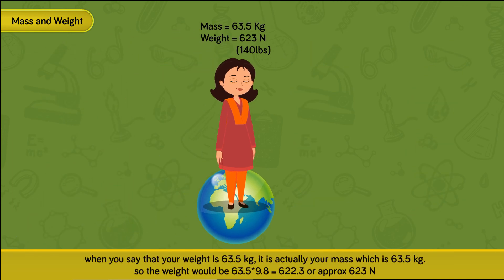So when you say that your weight is 63.5 kg, it is actually your mass which is 63.5 kg. The weight would be 63.5 into 9.8, which is equal to 622.3, approximately 623 newton.